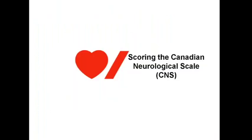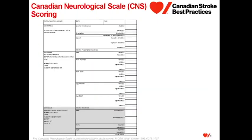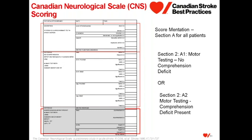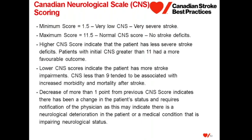So how do we score the Canadian Neurological Scale? We score Section A, Mentation, for all patients, then score either A1 motor testing — no comprehension deficit — or A2 motor testing with comprehension deficit. It is either A1 or A2, not both. The minimum score is 1.5, representing a patient who is drowsy, disoriented, has a receptive language deficit, asymmetrical face, and unequal arm and leg movement — a very severe stroke.